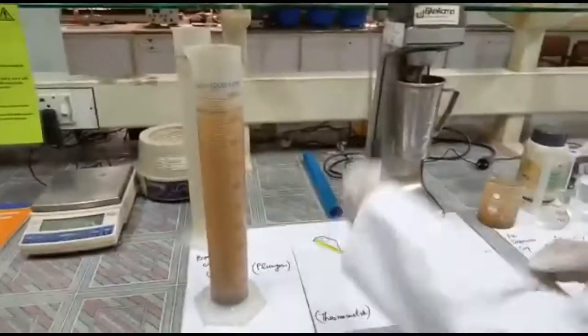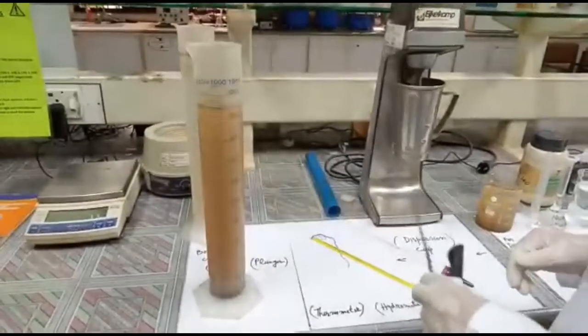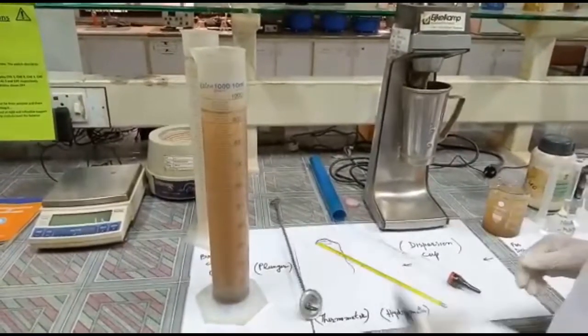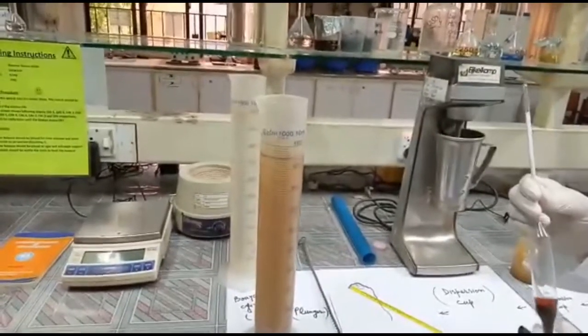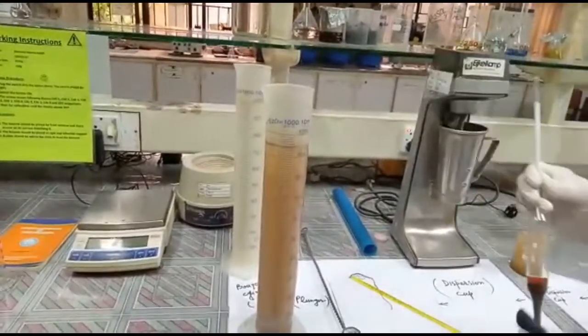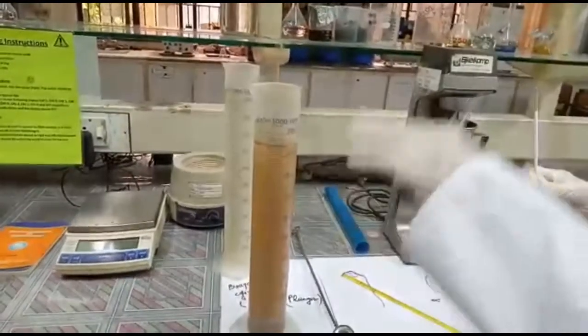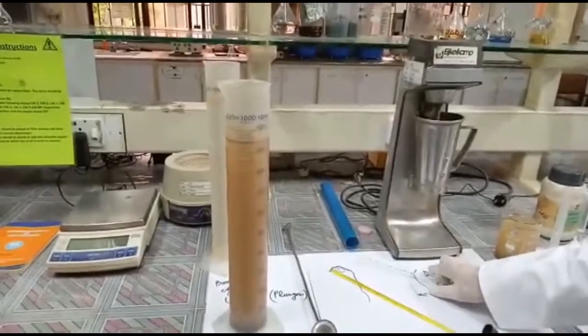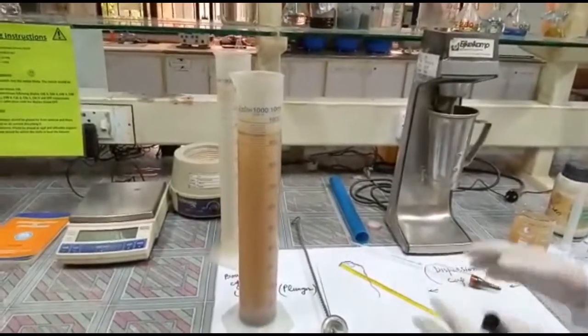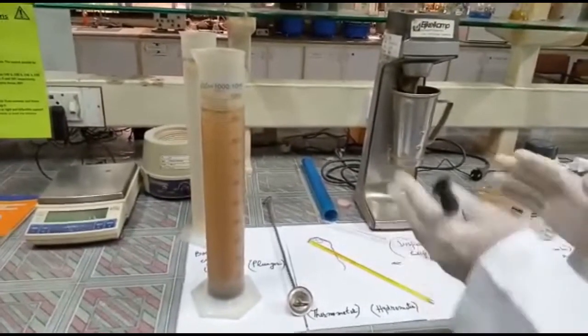Again we will shake it, disperse the suspension, and then we will take another reading with this hydrometer after 2 hours. This reading after 2 hours is actually the reading of the clay. Because by that time, sand also has settled down. In this way we get the readings of sand, clay, and silt.